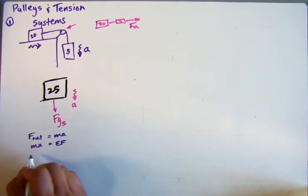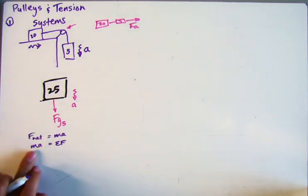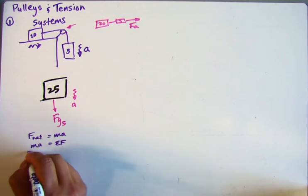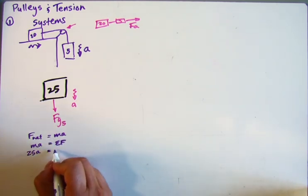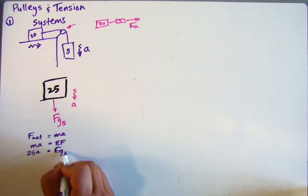So now from this, we can see that the mass times the acceleration, in this case, we can even put in our mass, it's 25A, equals the sum of the forces. Well, there's only one force. It's the force of gravity, so we can call it FG on 5.